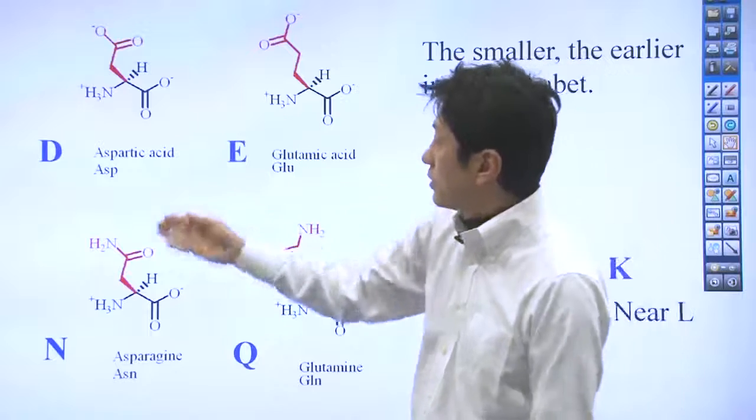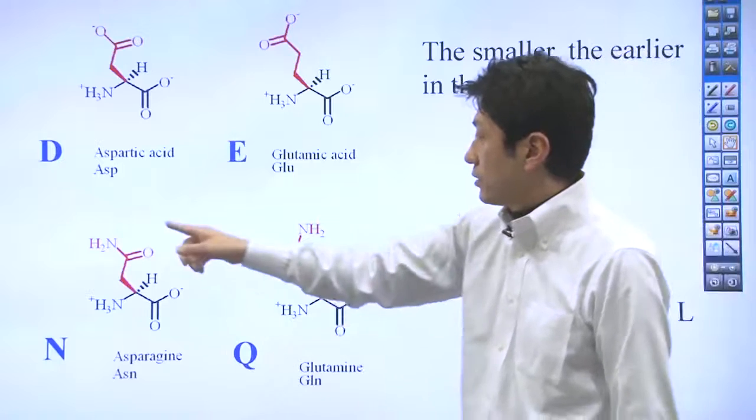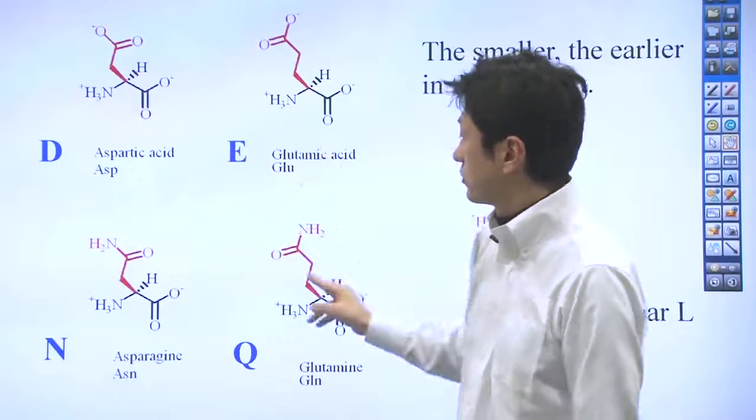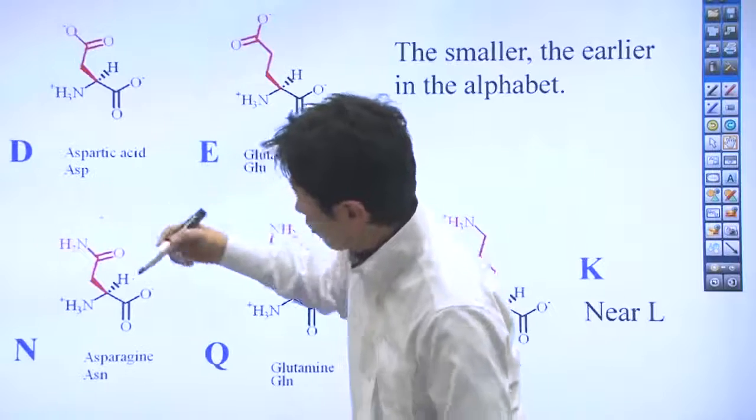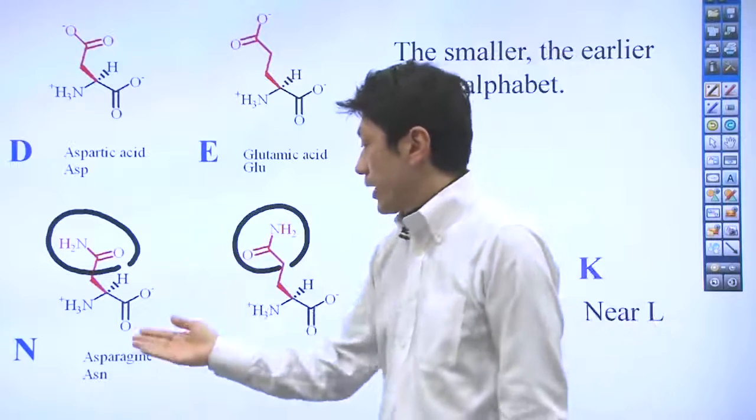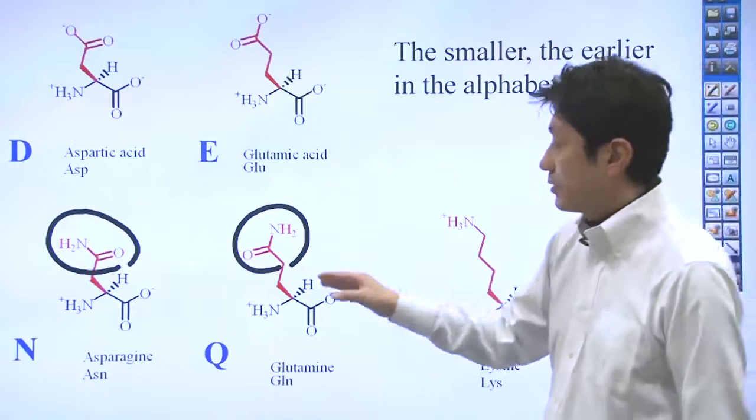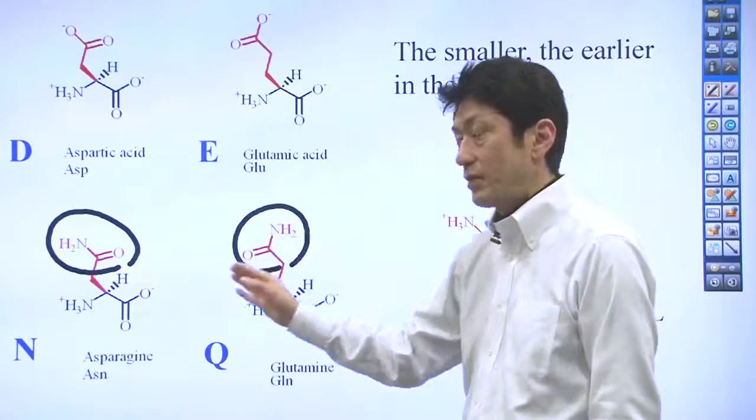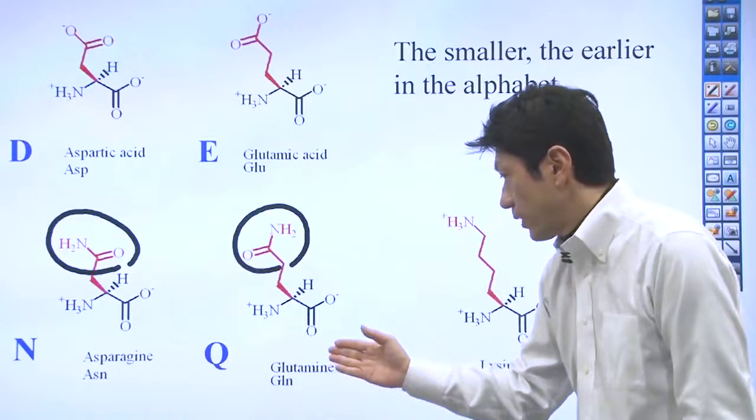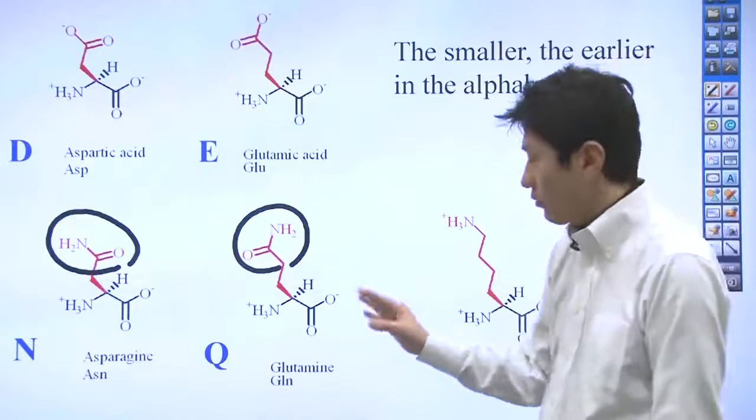These two are derivatives of aspartic acid and glutamic acid. These have NH2 at this position. It's called amide structure. We use N for asparagine and Q for glutamine. Again, the smaller, the earlier in the alphabet. But glutamine is really, really hard to remember. I would say glutamine, Q-cutamine is kind of similar. That's all I can say.